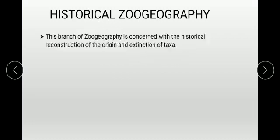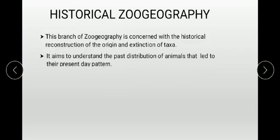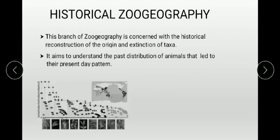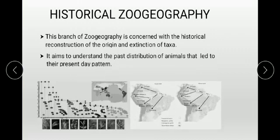The next branch is historical zoo geography. This branch is concerned with the historical reconstruction of the origin and extinction of taxa — meaning the differences between the past and present. It aims to understand the past distribution and present patterns, including which organs are extinct as remnant organs and which have evolved to bring changes for survival.